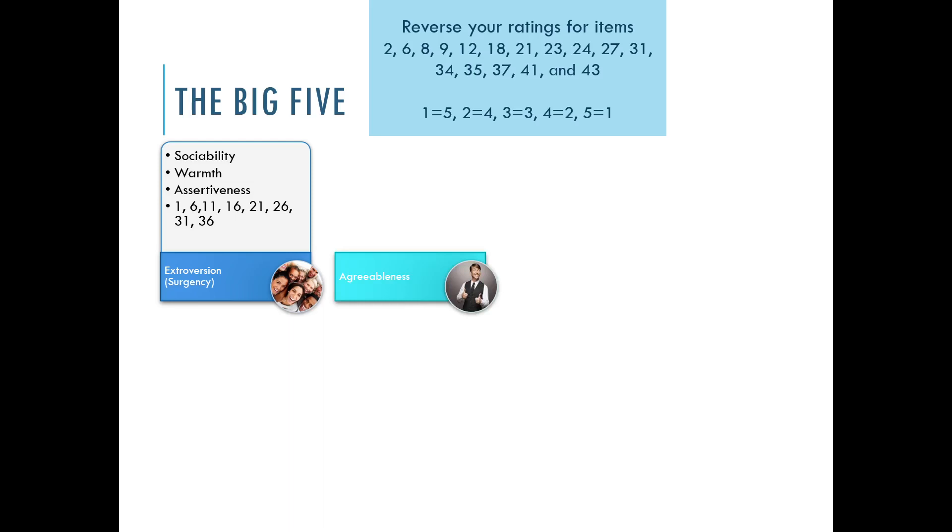Hopefully you're back with your extroversion score. Let's compute your agreeableness score. This is made up of straightforwardness, trust, altruism, and modesty. Add up your scores for the items listed here. Pause me and do that.